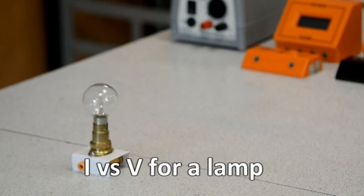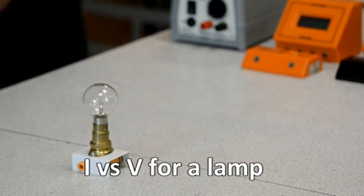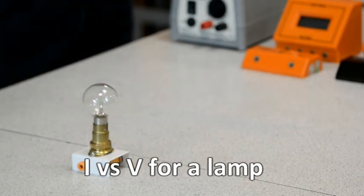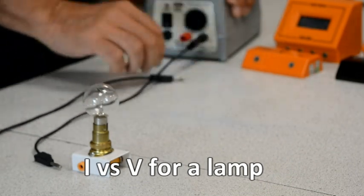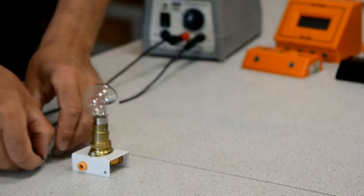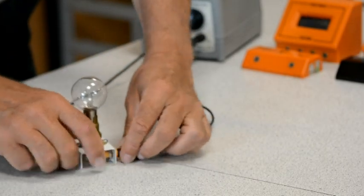Today we're going to look at the I versus V characteristics for a lamp. Having collected the equipment, the first thing to do would be to connect the lamp to the power supply just to make sure it's working.